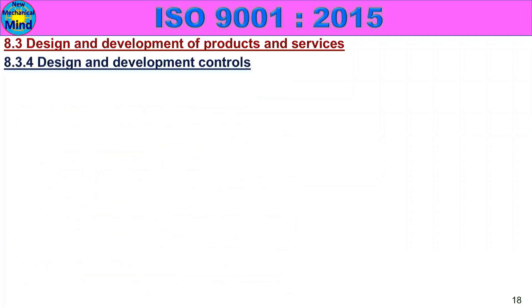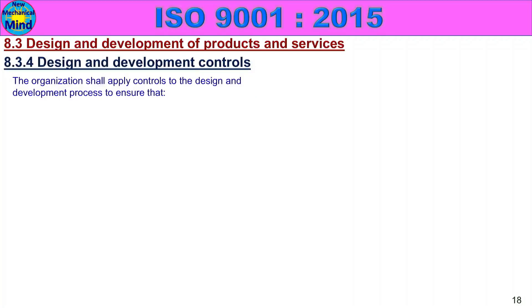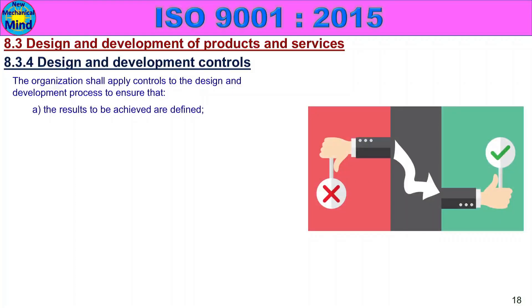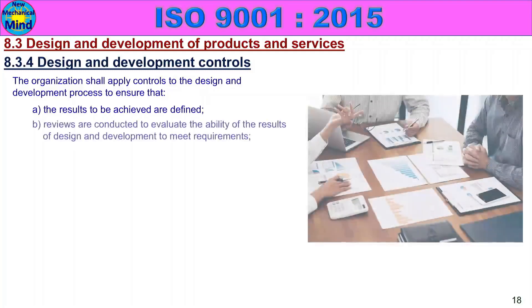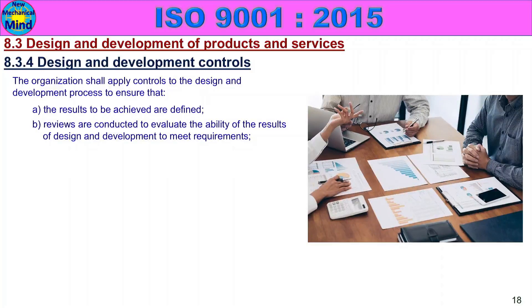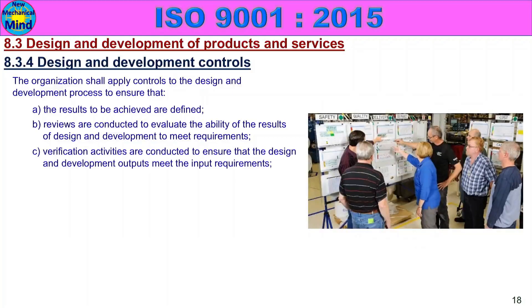8.3.4 Design and Development Controls. The organization shall apply controls to the design and development process to ensure that the product or service is properly controlled. The results to be achieved are defined. Reviews are conducted to evaluate the ability of the results of design and development to meet requirements, as an improvement activity. Verification activities are conducted to ensure that the design and development outputs meet the input requirements.